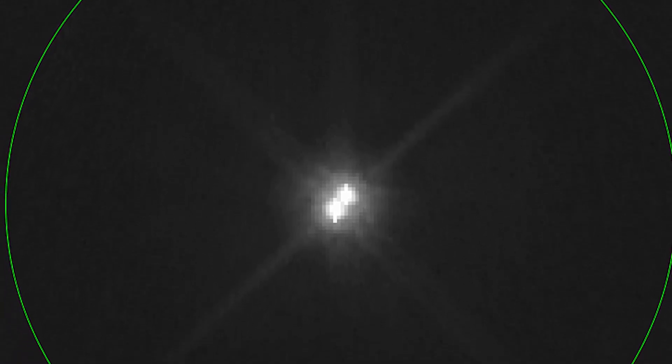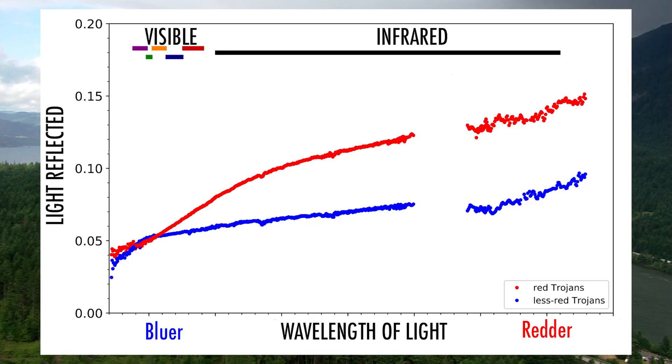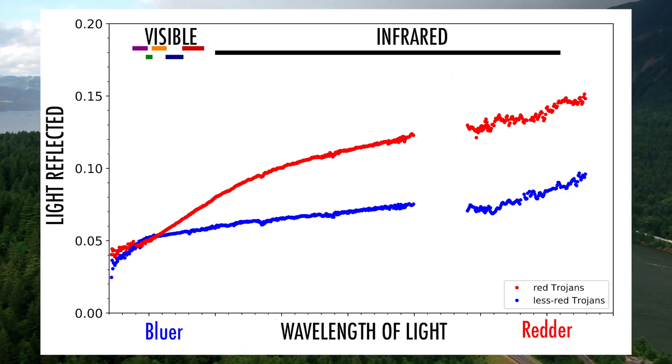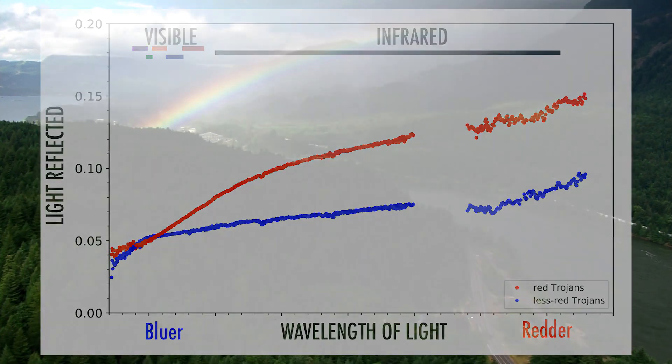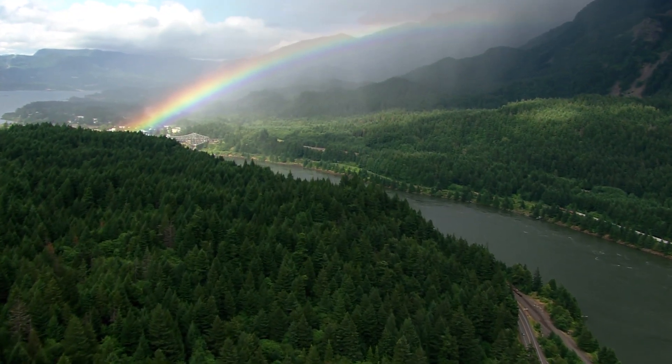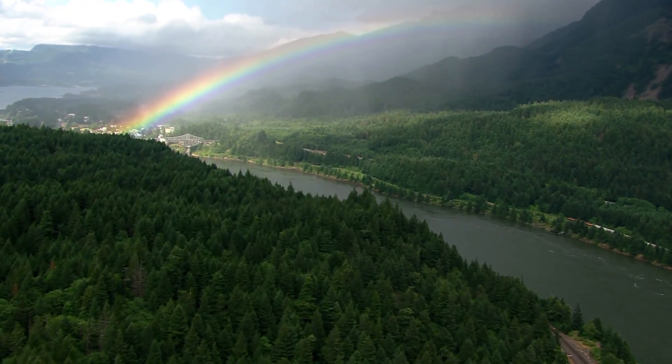Spectra can tell you about the surface composition. A spectrum is when you take light and spread it out into all its different wavelengths. You have the brightness of the light as a function of wavelength. Think of it like a rainbow, but you're going to divide up the colors even more finely than just ROYGBIV.